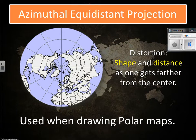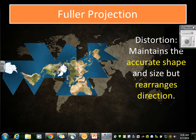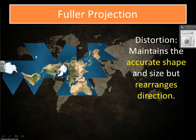The azimuthal equidistant projection distorts distance and shape. The further out from the center you get, the more distortion you're going to have. Oftentimes this is showing the polar region — it's as if you're looking down over the top or bottom of the map. Fuller projection is definitely a strange one — it maintains the shape, but changes the location or direction of landmasses. So North America and South America are there, but the location of the continents is changed while the shape is maintained.